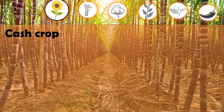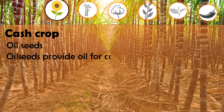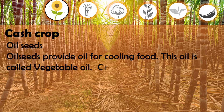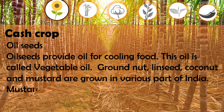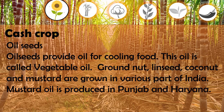Oil seeds provide oil for cooking food; this oil is called vegetable oil. Groundnut, linseed, coconut, and mustard are grown in various parts of India. Mustard oil is produced in Punjab and Haryana, while groundnut is grown in Gujarat and Maharashtra.